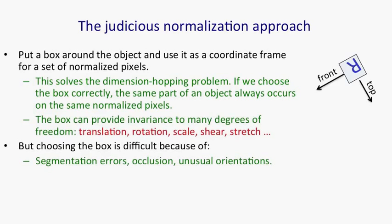Unfortunately, choosing the box is difficult. It's difficult because we might have segmentation errors, occlusion, or unusual orientations. That example of the upside-down R makes it clear that we have to use our knowledge of what the shape is to help us decide what the box is.